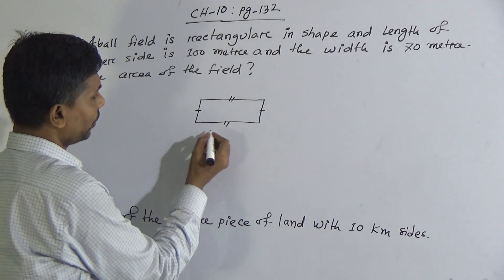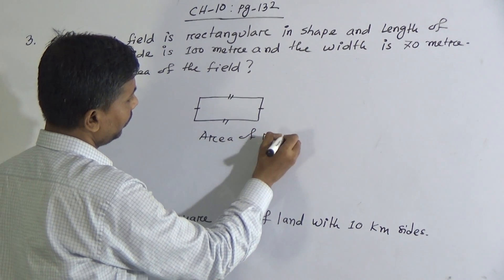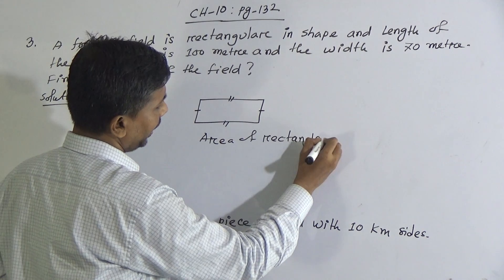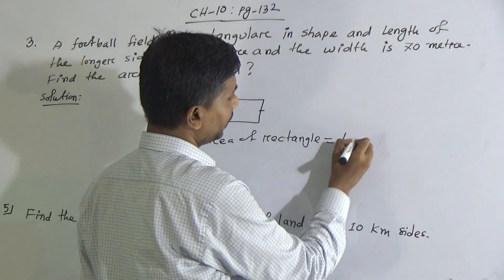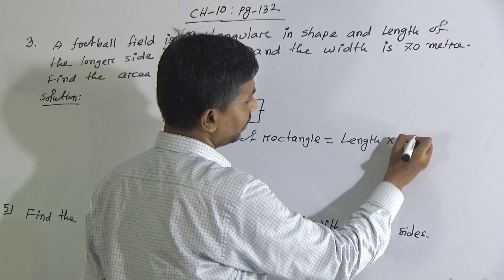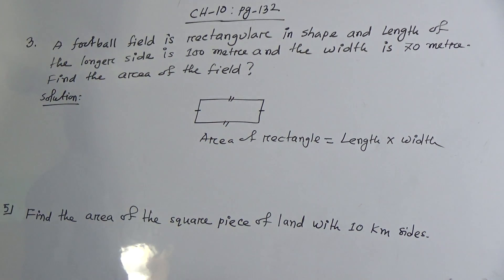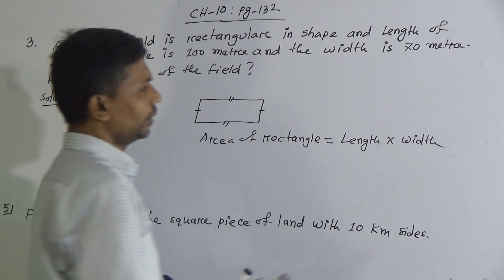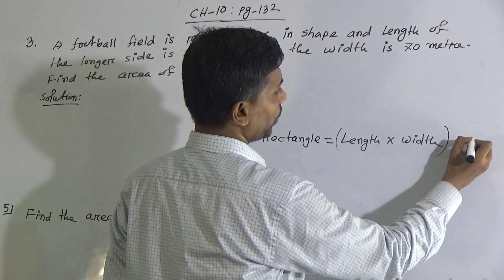Now we have to determine its area. So, area of rectangle formula is: area of rectangle is equal to length into width, and this will be square unit.